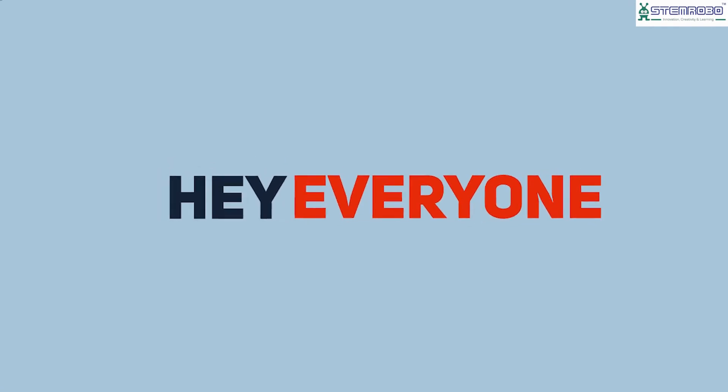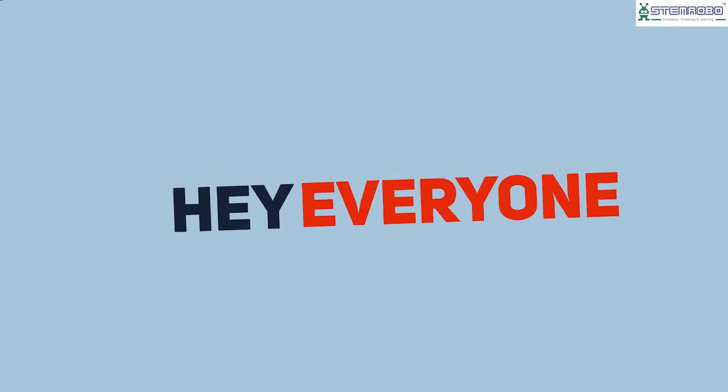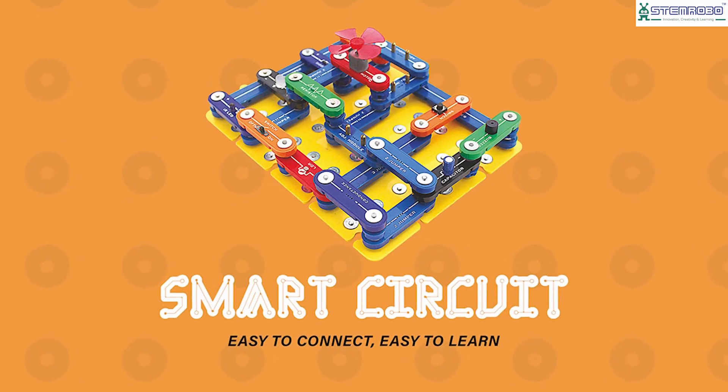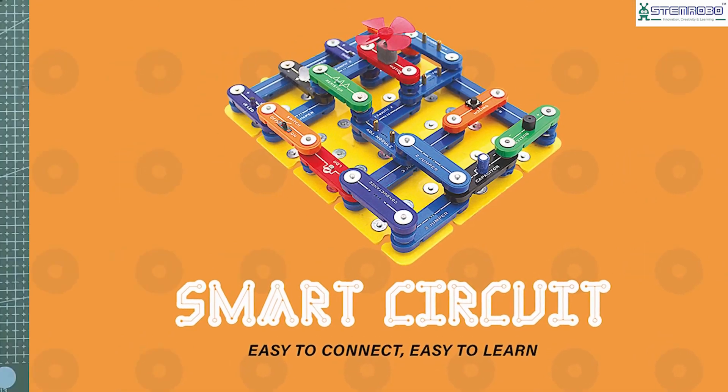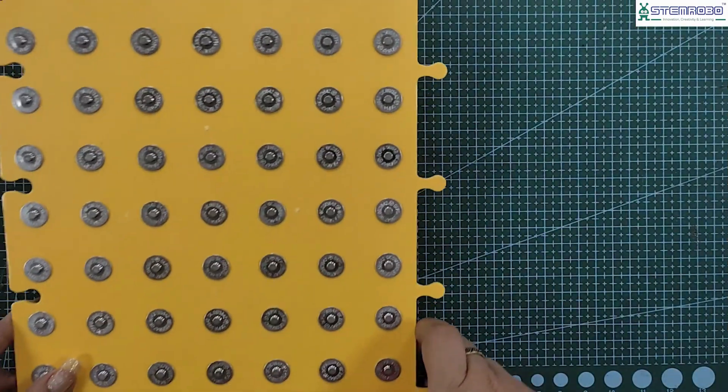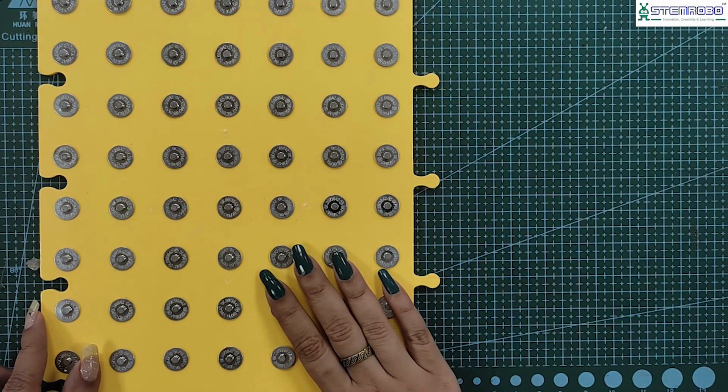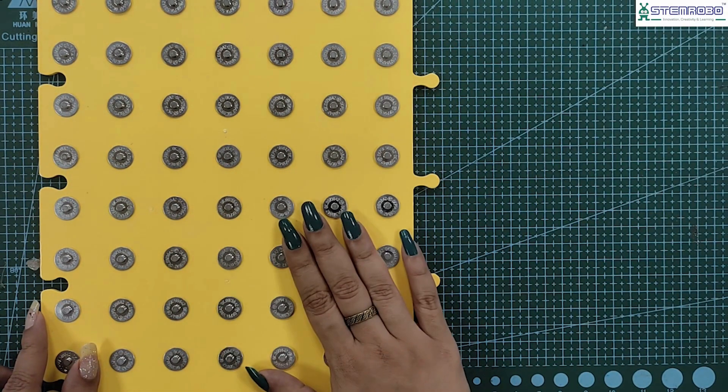Hey everyone, today we are going to perform an activity: light up a bulb. We're going to perform this activity using smart circuit, so let's see the requirements. We will be requiring the magnetic board to perform the activity where we're going to make the connections.